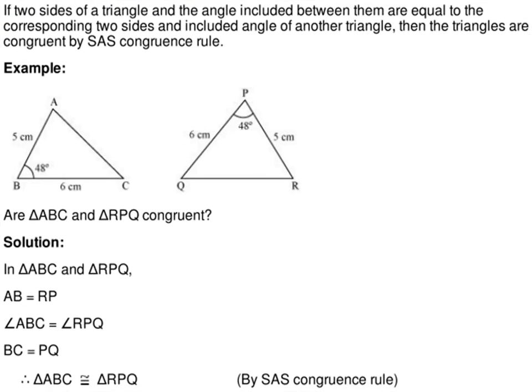In this topic, we will consider the SAS Congruence Rule. If two sides of a triangle and the angle included between them are equal to the corresponding two sides and included angle of another triangle, then the triangles are congruent by SAS Congruence Rule.